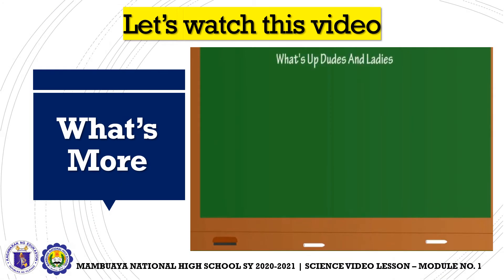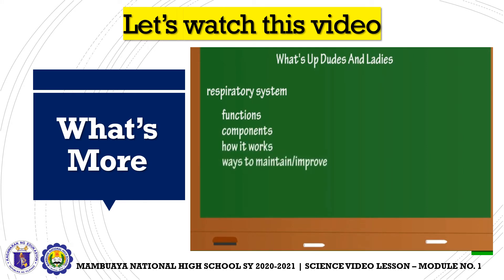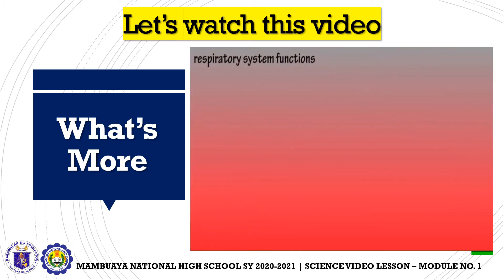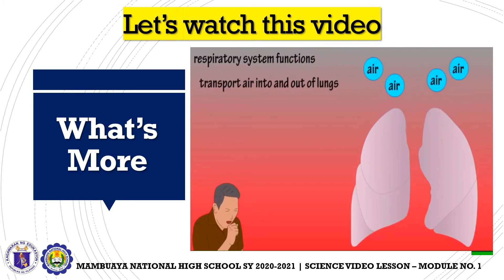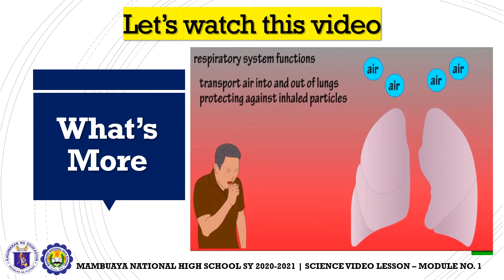Brian here, and in this video we are going to look at the respiratory system — the functions of the respiratory system, its components, how the system works, and some things you can do to maintain a healthy respiratory system. The respiratory system's main functions include transporting air into and out of the lungs, protecting the body against harmful particles that are inhaled, and its most important function: the exchange of oxygen and carbon dioxide.